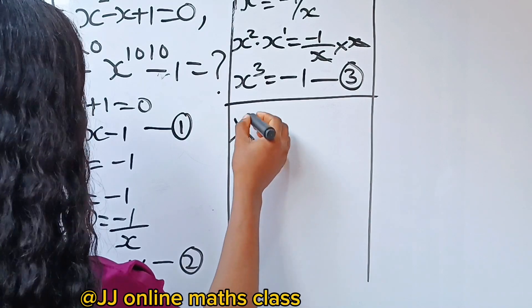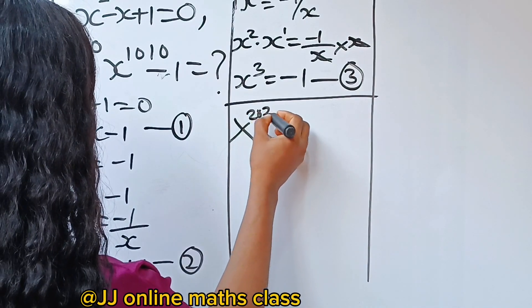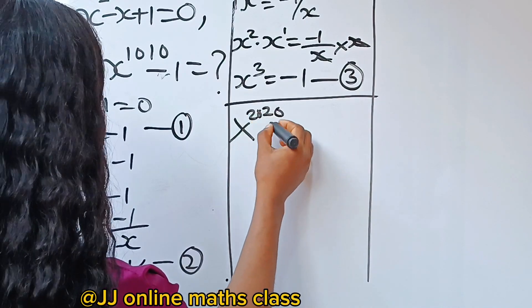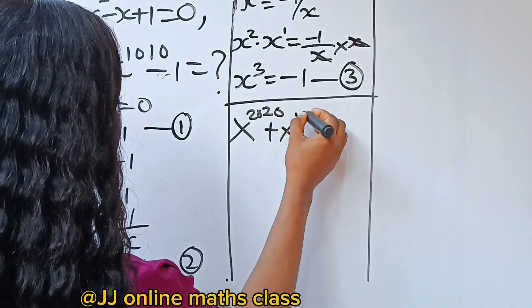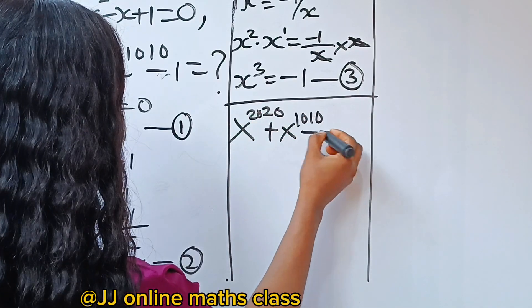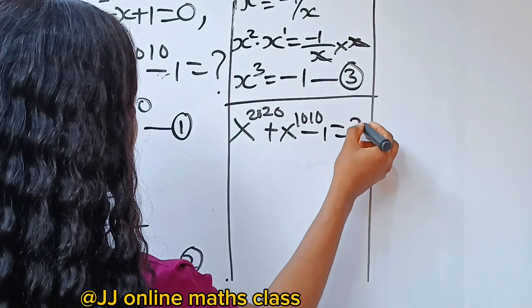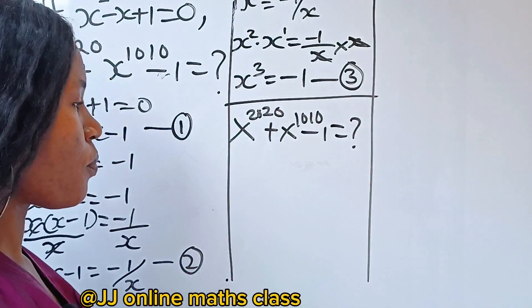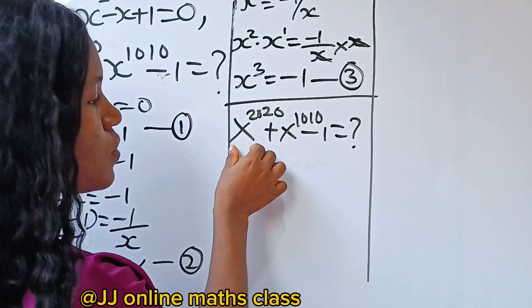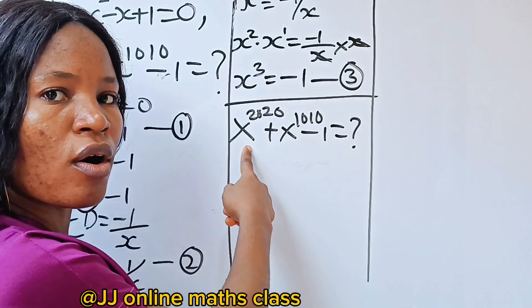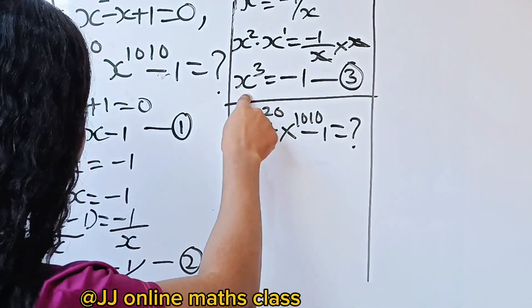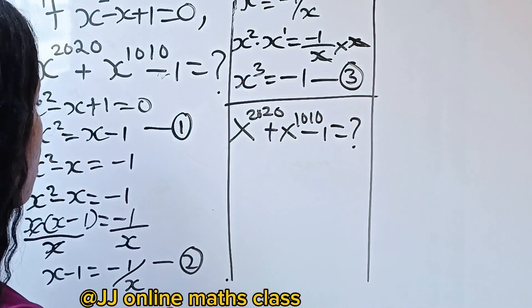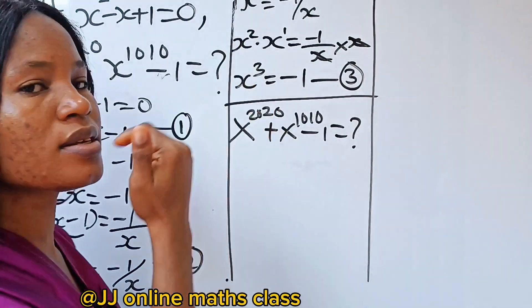The question asks: x to the power of 2020 plus x to the power of 1010 minus one equals what? Let's use all the values we found to manipulate each term.